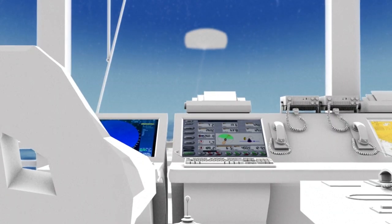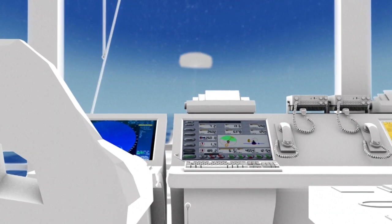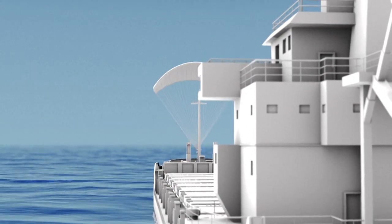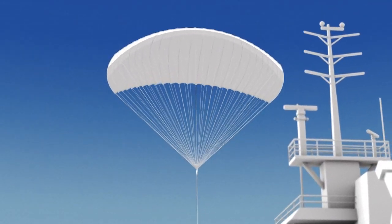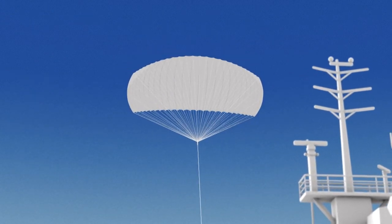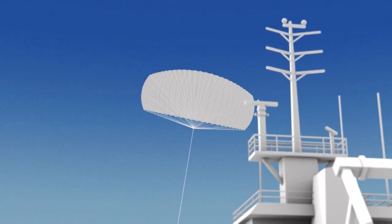Routing software analyzes oceanographic and meteorological data. The 500 to 1,000 square meter sail deploys and adjusts automatically. These vessels are capable of crossing the Atlantic.